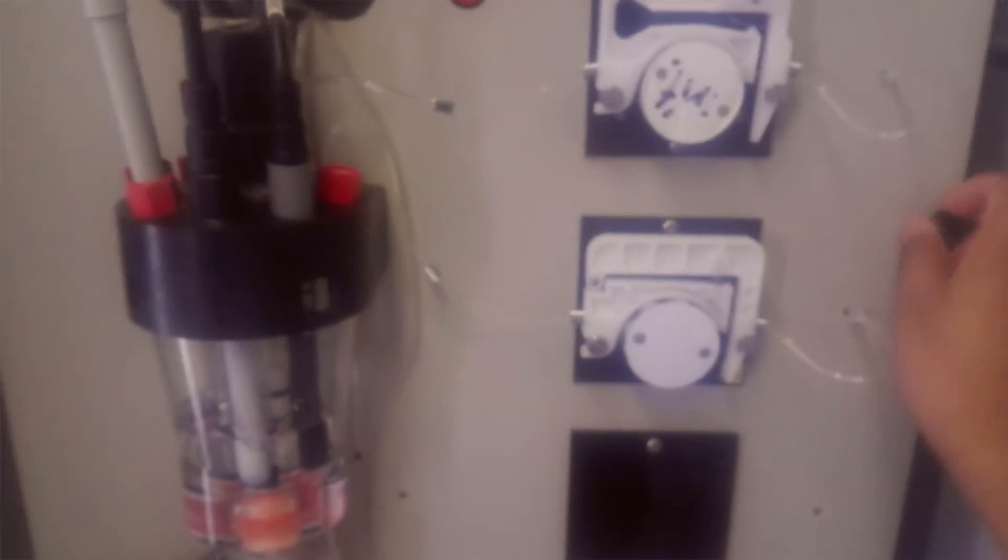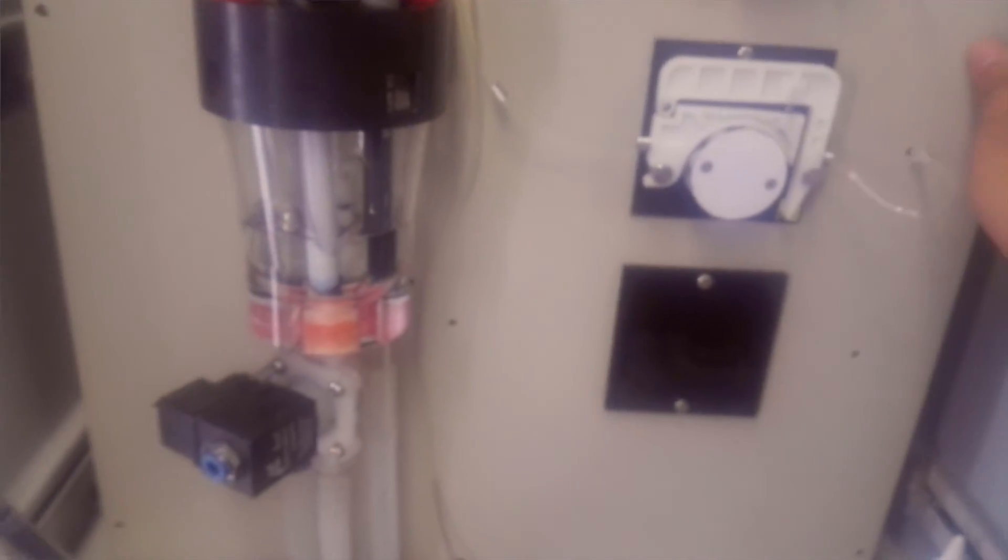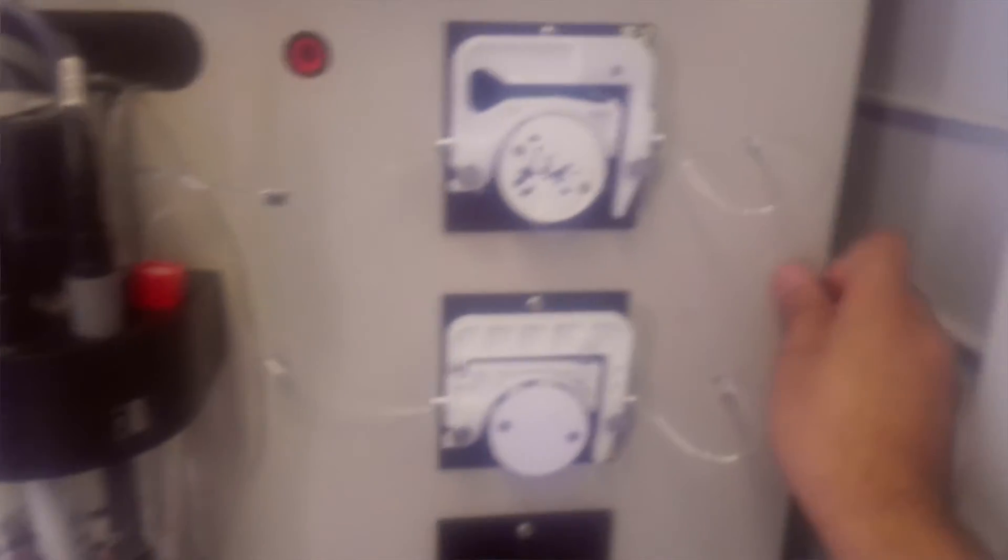Open the panel plate by unscrewing this knob. Open slowly and carefully because there are sample water, deionized water, and pneumatic air connections which can be disconnected.